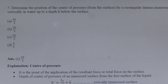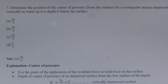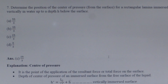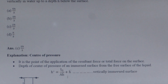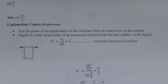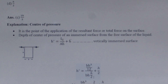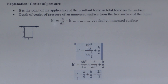Next question: Determine the position of the center of pressure from the surface for a rectangular lamina immersed vertically in water. The center of pressure is given by H* = IG/(A·H̄) + H̄. For a rectangle, IG = BH³/12, area A = B·H, and H̄ = H/2. Substituting these values into the formula gives the depth of the center of pressure equal to 2H/3.